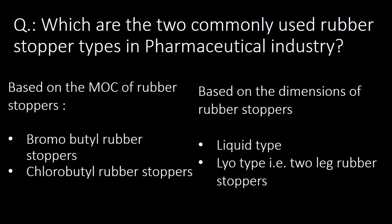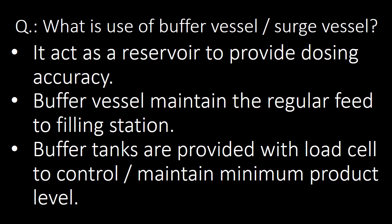Which are the two commonly used rubber stopper types in the pharmaceutical industry? You can answer in two ways: based on MOC — bromobutyl and chlorobutyl rubber stoppers; or based on dimensions — liquid type and lyophilization (lyo) type, where the lyo type rubber stopper has two legs.